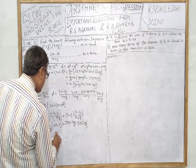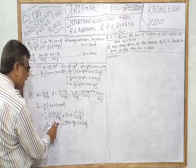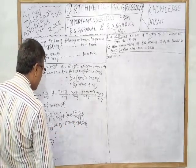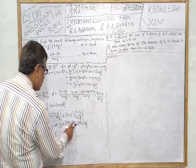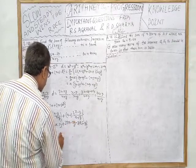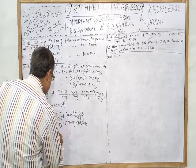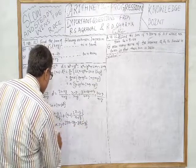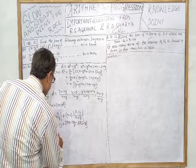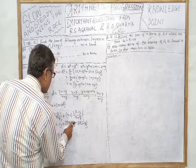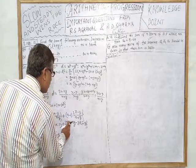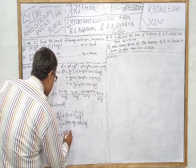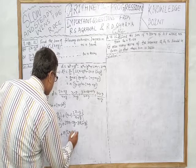Rearranging, we get n/2 × (x+y) in the denominator, and from the numerator after cancellation: x terms cancel, leaving N(2x-y) minus y. So the final result is n/2 × [n(2x-y) - y] / (x+y).